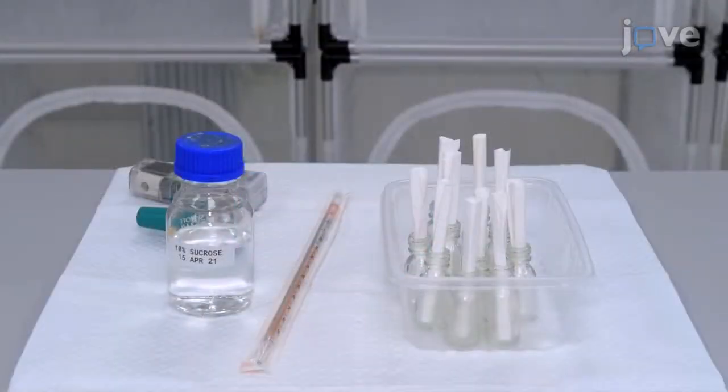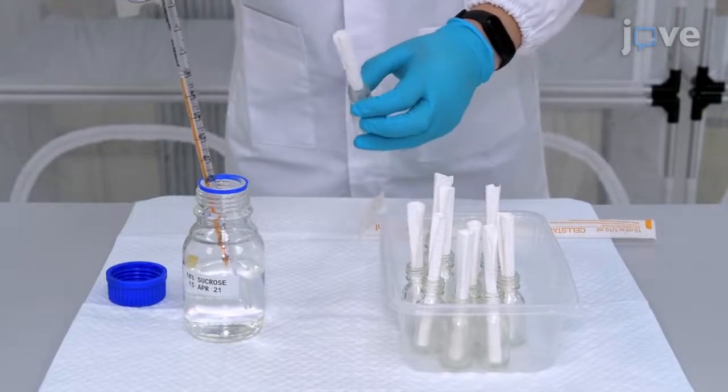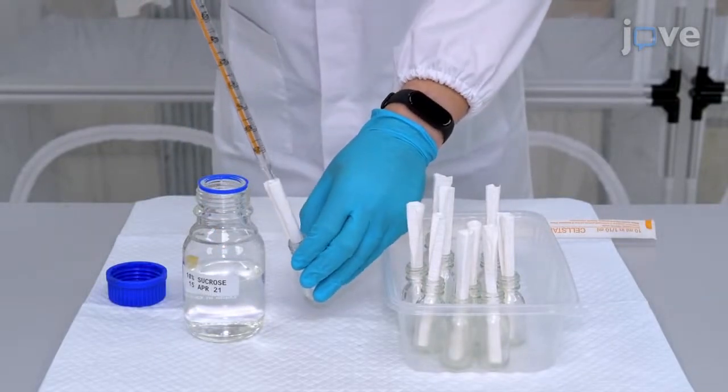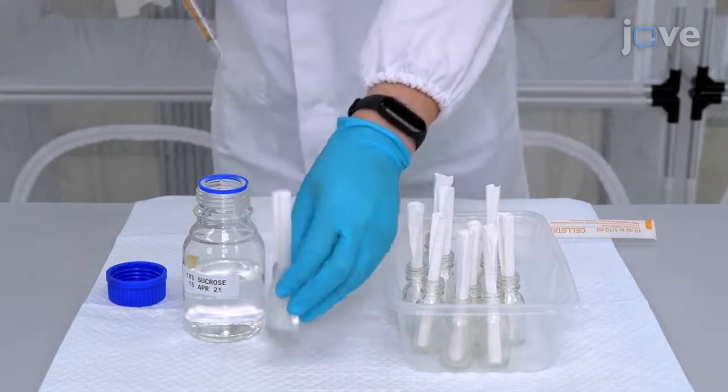Prepare 20 sugar feeder bottles with a wick. Add 10 ml of 10% sucrose to 10 feeder bottles and 10 ml of 0.2% Rhodamine B sucrose solution for the other 10 feeder bottles.